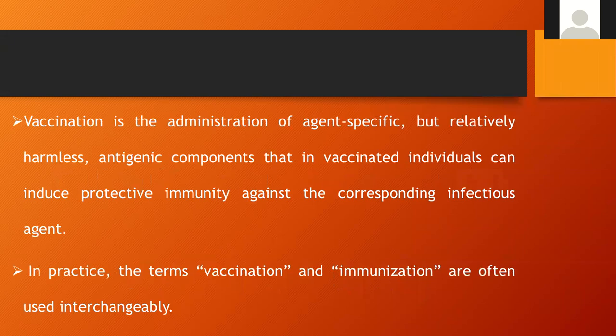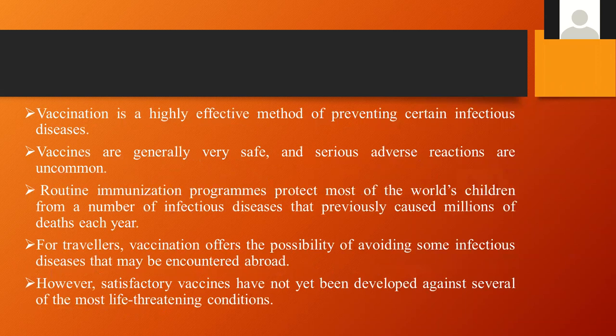What does vaccination mean? Vaccination is the administration of an agent — specific but relatively harmless — an antigenic component that is inactivated in the vaccinated individual, which can induce a protective immunity against the corresponding infectious agents. In practice, the terms vaccination and immunization are often used interchangeably. Vaccines are highly effective methods for preventing various infectious diseases, and normally vaccines are very safe.